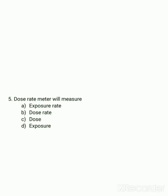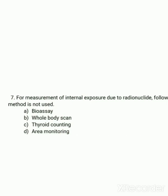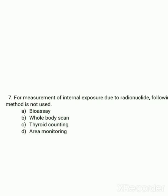For estimating alpha contamination, a special kind of detector is used — that is the ZnS detector, the zinc sulfide detector.